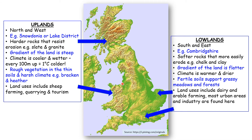Now let's move on to lowland areas. They're found to the south and the east side of the country — an example is Cambridgeshire. They have softer rocks that are more easily broken down and eroded, and obviously the land is flatter. Because the climate is warmer and drier, crops grow really well. Water drains into the ground easily, it's easy to use farm machinery, so dairy farming and arable farming (crop farming) take place here. Very good soils support grassy meadows and forests, and humans have spread their cities, industry, and infrastructure such as roads and motorways here — very easy to build on flat land.